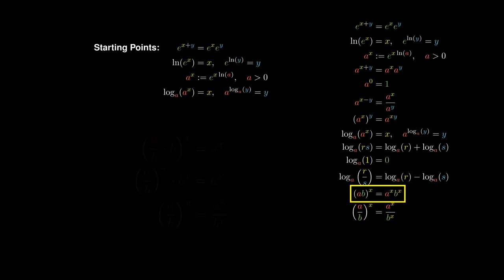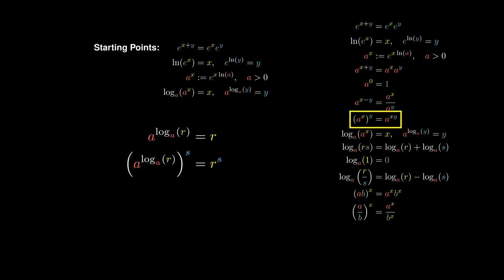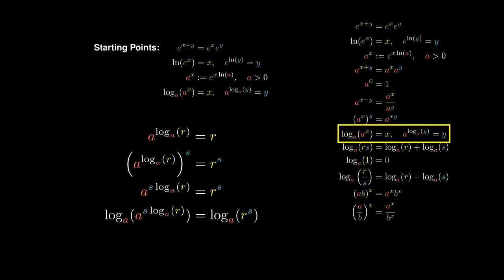Now let's consider once again the expression a to the log base a of r. Since exponentials and logarithms reverse one another, the right-hand side simplifies to r. We can raise both sides to the s, and since the power of an exponential is the exponential of a product, the left-hand side simplifies to a to the s log base a of r. Taking logarithms on both sides, since logarithms and exponentials cancel each other out, the left-hand side is s times logarithm base a of r, and the right side is logarithm base a of r to the s.